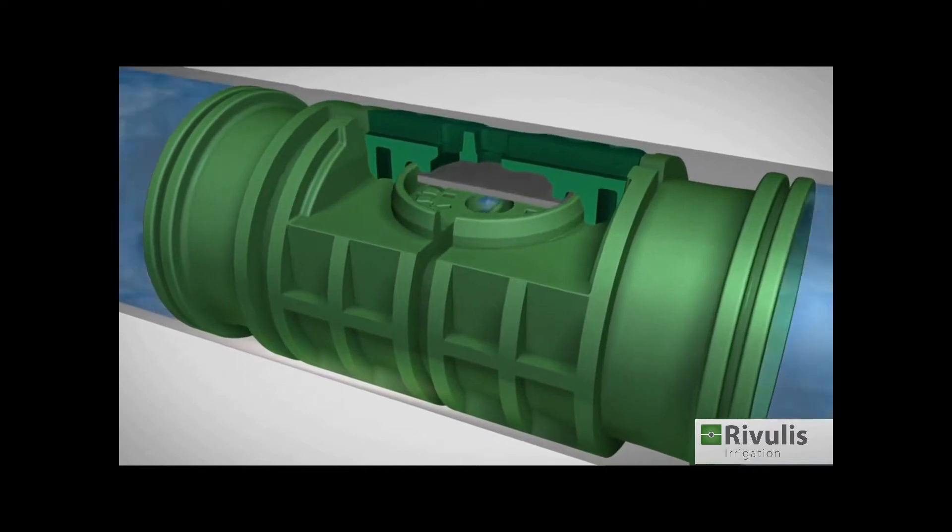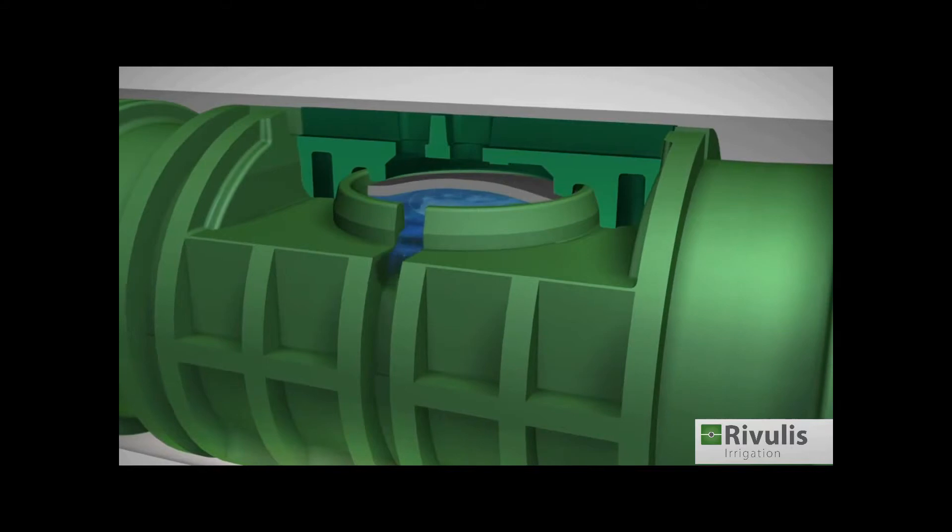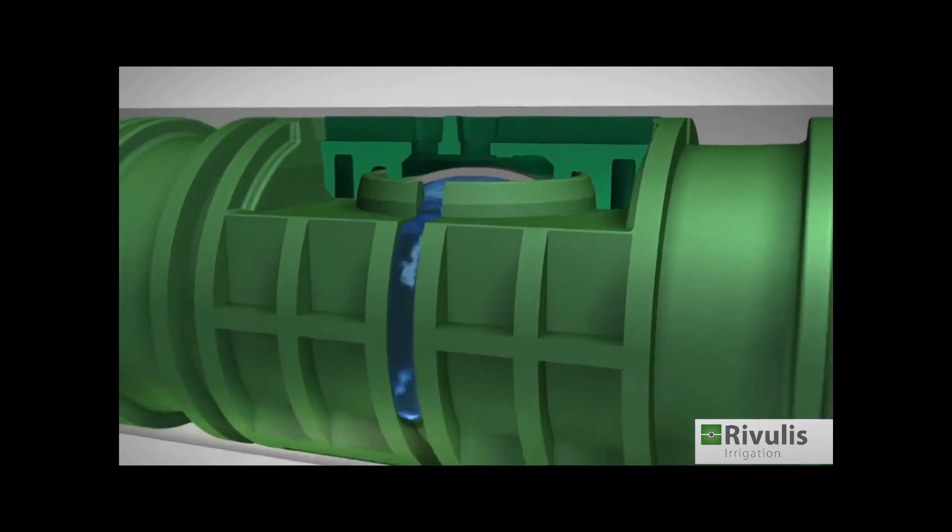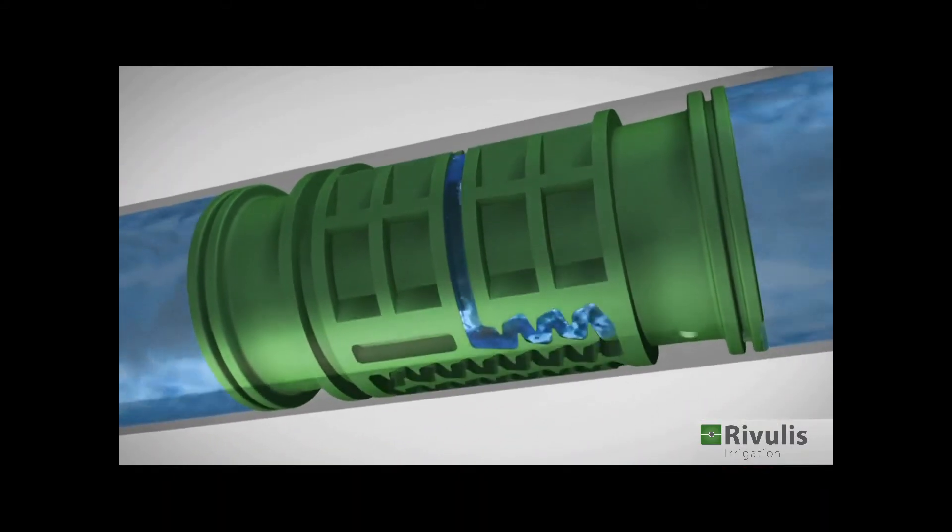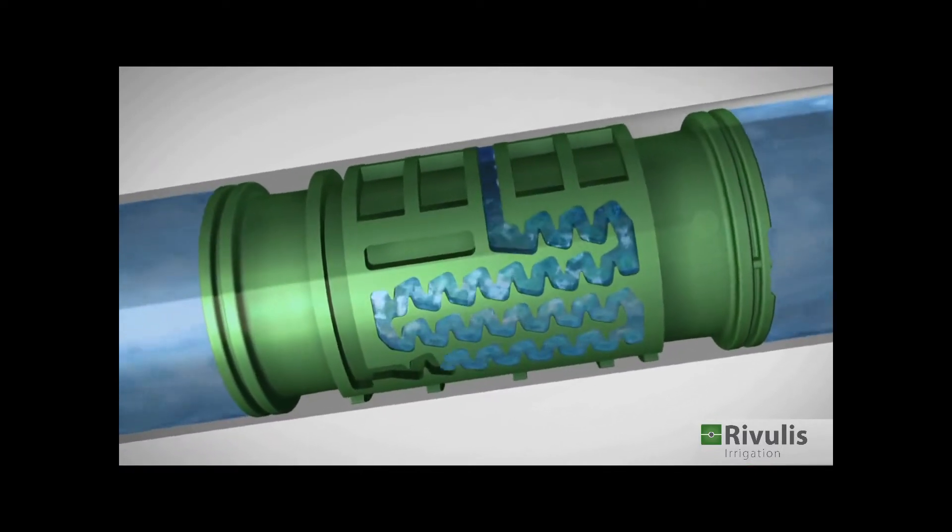The water from the pipe enters the dripper through the inlet filter and exerts pressure on the bottom of the diaphragm. The large cross-sectional labyrinth provides excellent protection against clogging.